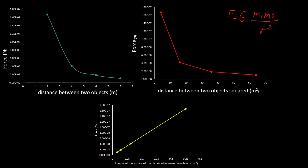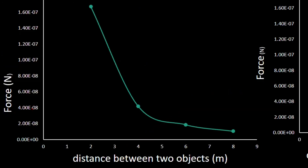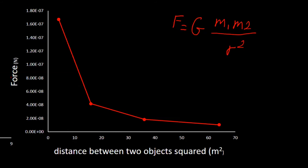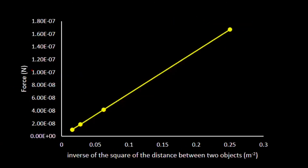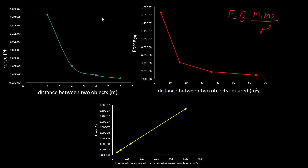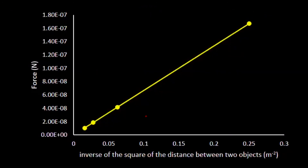Using the data from our calculations, I drew three graphs. The first is force versus distance between two objects — this is the F vs R graph. The second is force versus distance squared — the F vs R² graph. The third is force versus the inverse of the square of distance — the F vs 1/R² graph. As you can see, the only graph that is linear is the last one, so it is most helpful for finding G because calculating the gradient is easier.